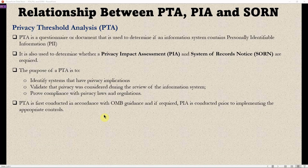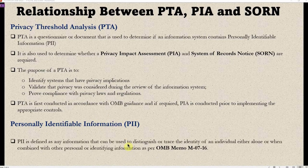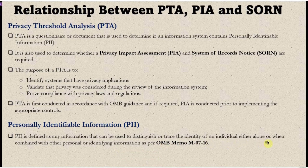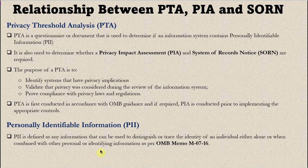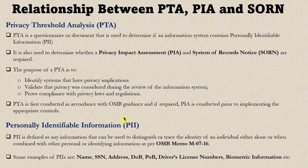PII is defined as any information that can be used to distinguish or trace the identity of an individual, either alone or when combined with other personal or identifying information, as per OMB Memo M-07-16. Examples of PII include name, social security number, address, date of birth, place of birth, driver's license numbers, biometric information, and email addresses. All of this information can be used to identify a person.